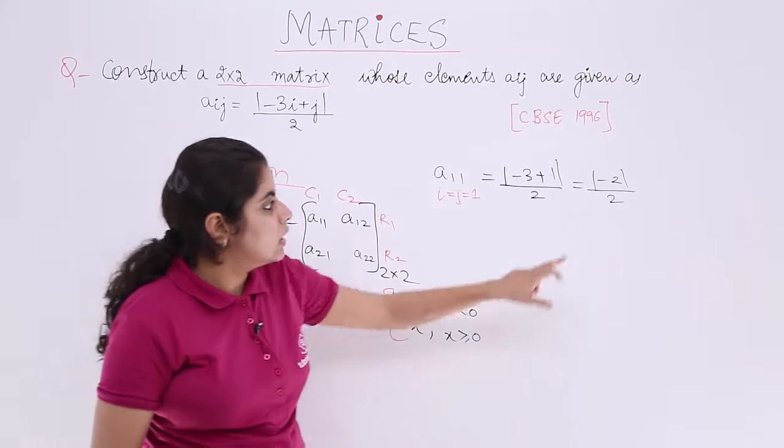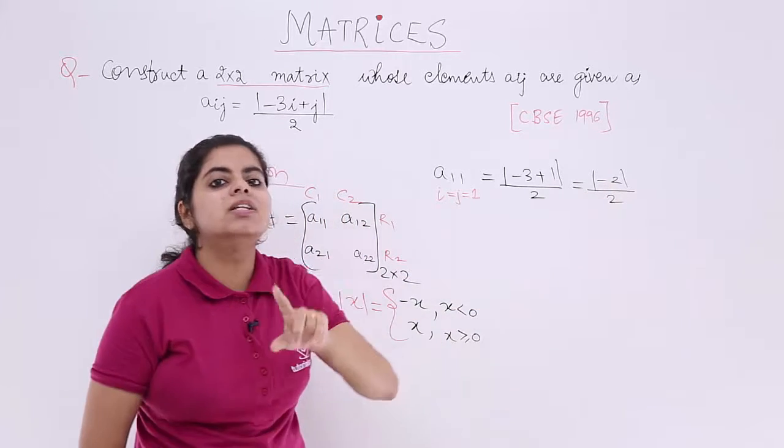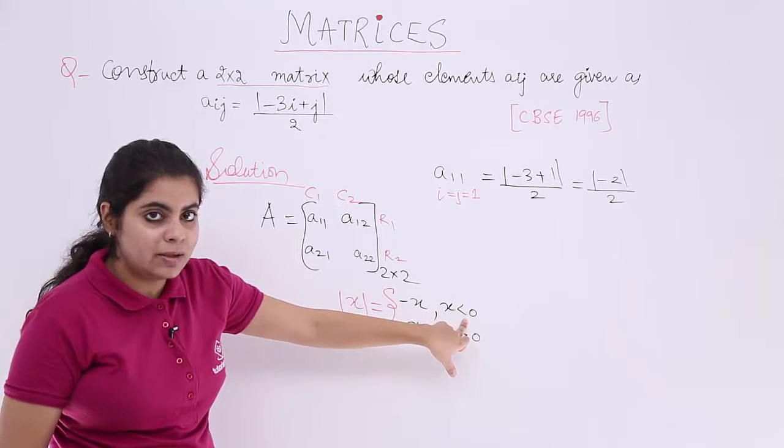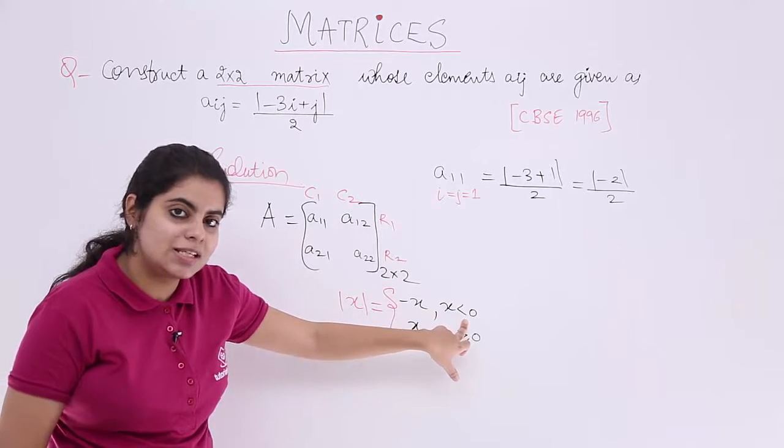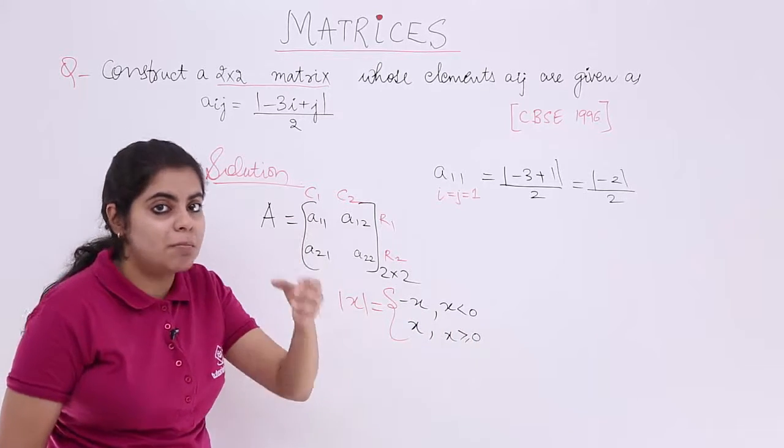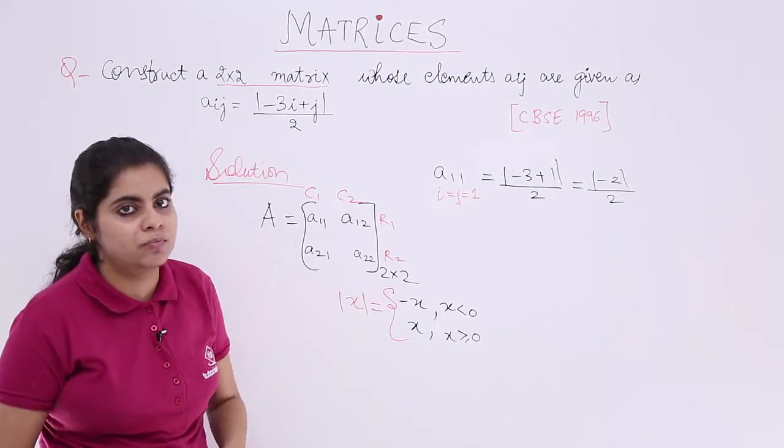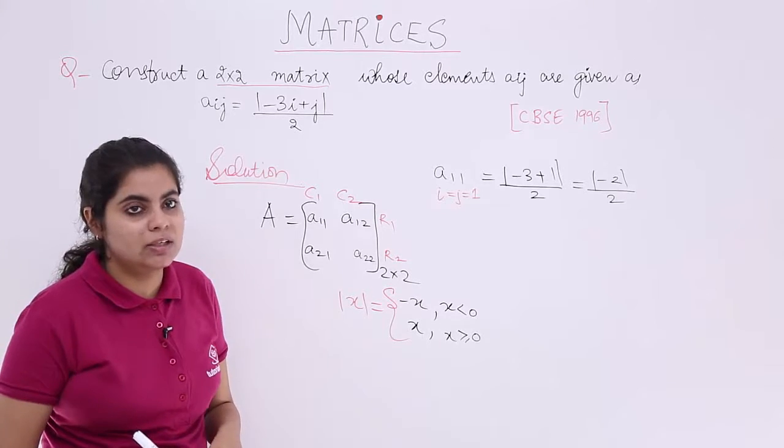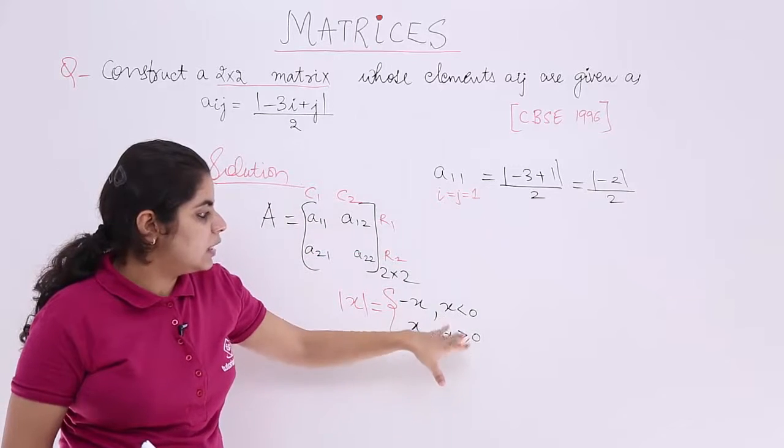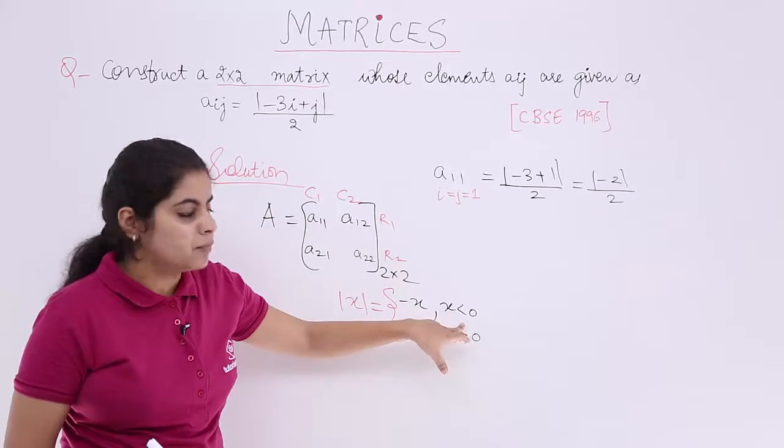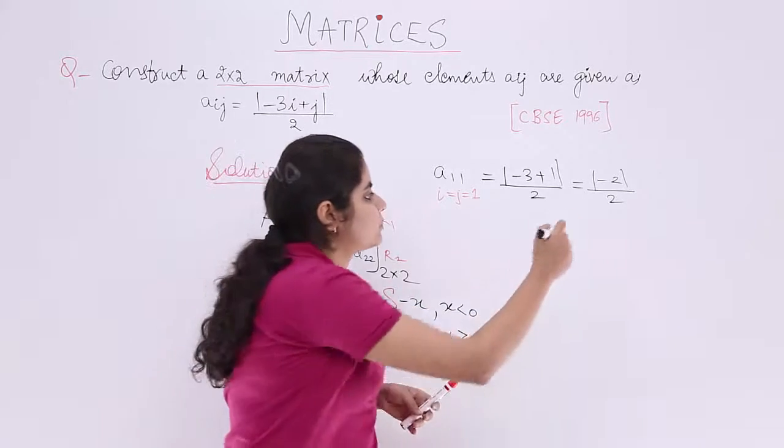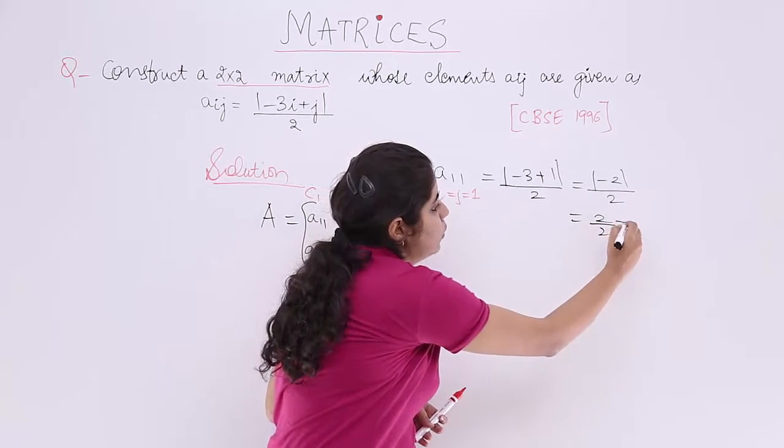Now let's look at what is inside mod. Minus 2. That means minus 2 is less than 0 category. Minus 2 being less than 0 becomes minus x. So it becomes minus of minus 2. Minus 2 is a negative term, so minus of x should be there. That means minus of minus 2 which is plus 2. So it becomes 2 upon 2 which is 1.